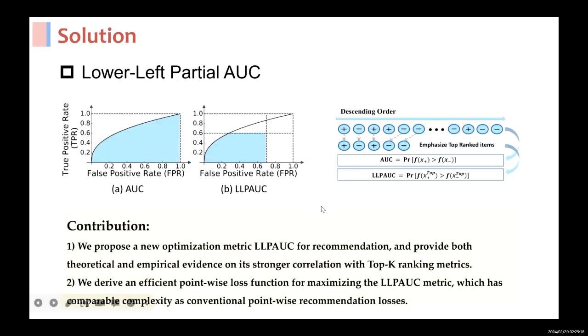So in this work, we propose a new optimization metric, Lower Left Partial AUC, LLPAUC, which is computationally efficient like AUC but strongly correlated with top-K ranking metrics.